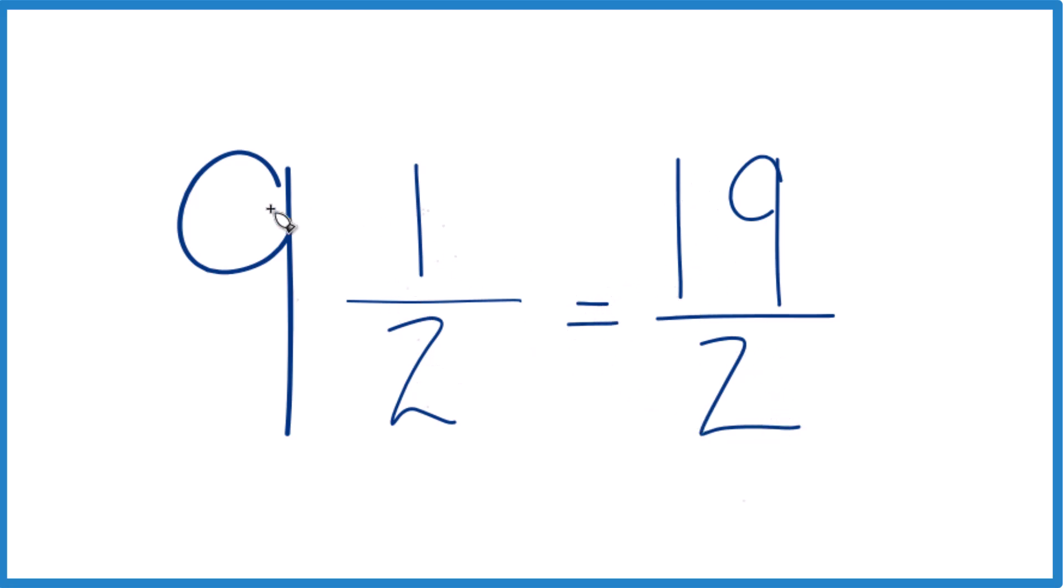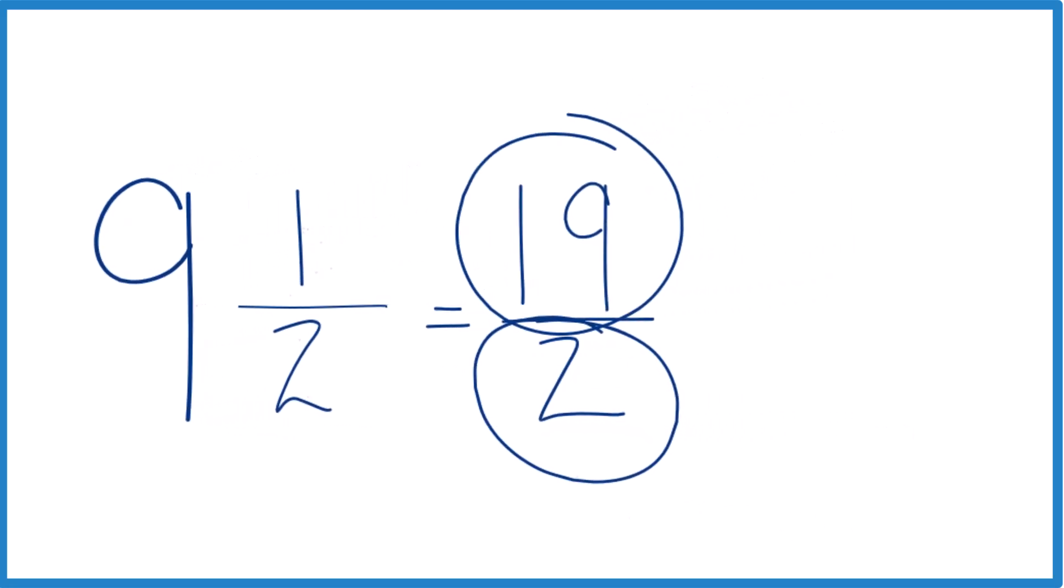Let's do that again. 9 times 2 is 18. 18 plus 1, 19. That's the numerator. Bring the denominator across, and we're done. We got it.